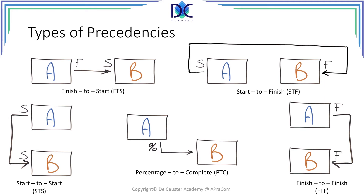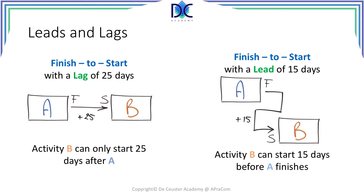In the percentage-to-complete relationship, task or activity B can start when task or activity A has been completed for a certain percentage. Activity A does not have to be completed totally before activity B can start. Now let's have a look at leads and lags. What is a lag? A lag is a delay between the start of a successor task and the end of a predecessor task. In our case, I selected a lag of 25 days, meaning when task A finishes, activity B can only start after waiting 25 days.